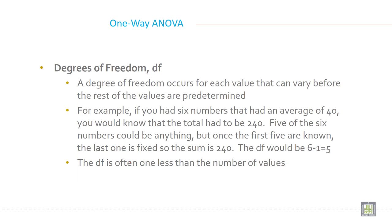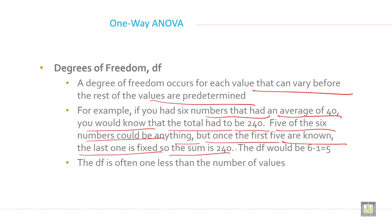Now degrees of freedom. How can you decide degree of freedom? A degree of freedom occurs for each value that can vary before the rest of the values are predetermined. For example, if you had six numbers that had an average of 40, you would know that the total had to be 240. Five of the six numbers could be anything, but once the first five are known, the last one is fixed so that the sum is 240. The degree of freedom would be 6 minus 1, that is 5. The degree of freedom is often one less than the number of values.